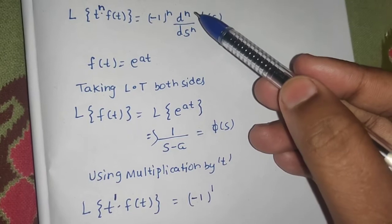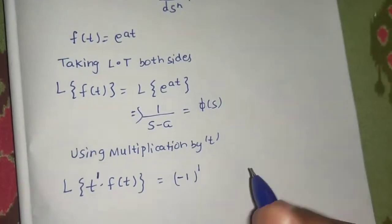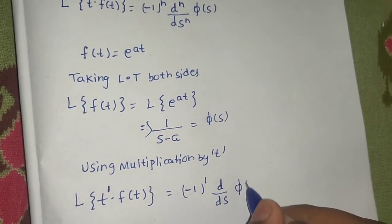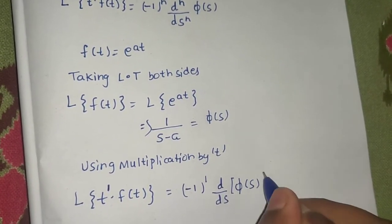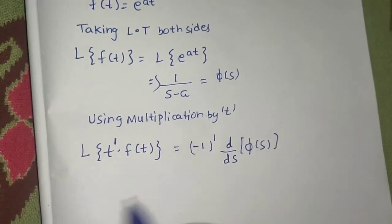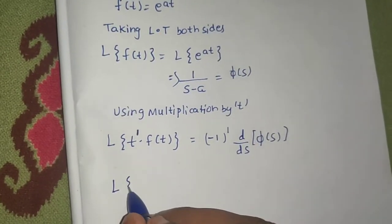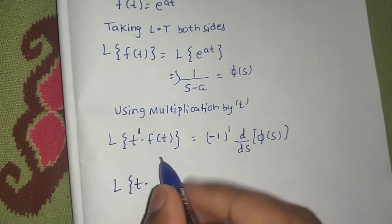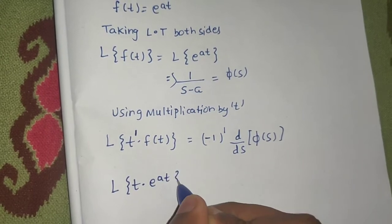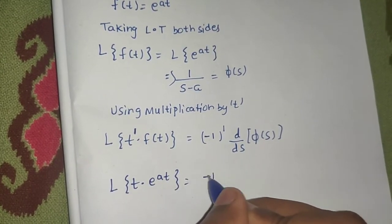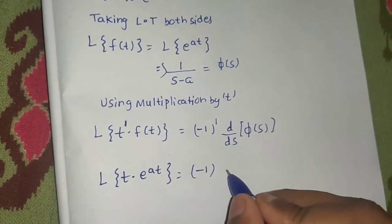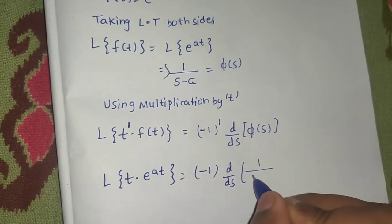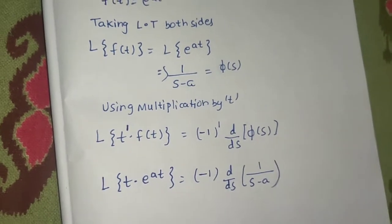Here, you will have the first derivative because d by ds will be there. So, first derivative with respect to s of phi of s. This will be Laplace of t into ft. You have e power at. So, this will be minus 1 d by ds of phi of s is 1 upon s minus a.